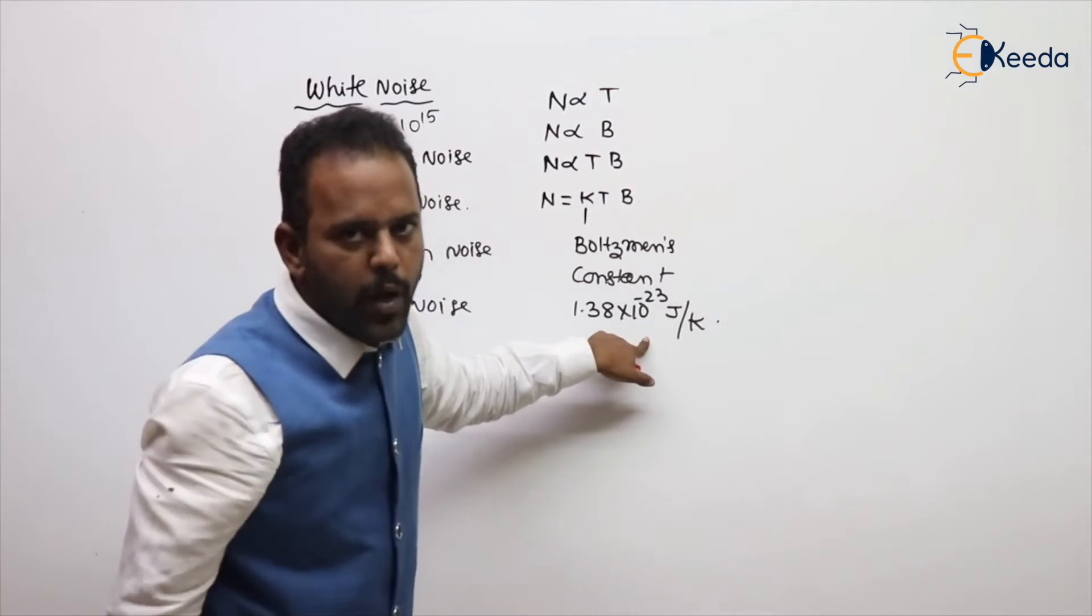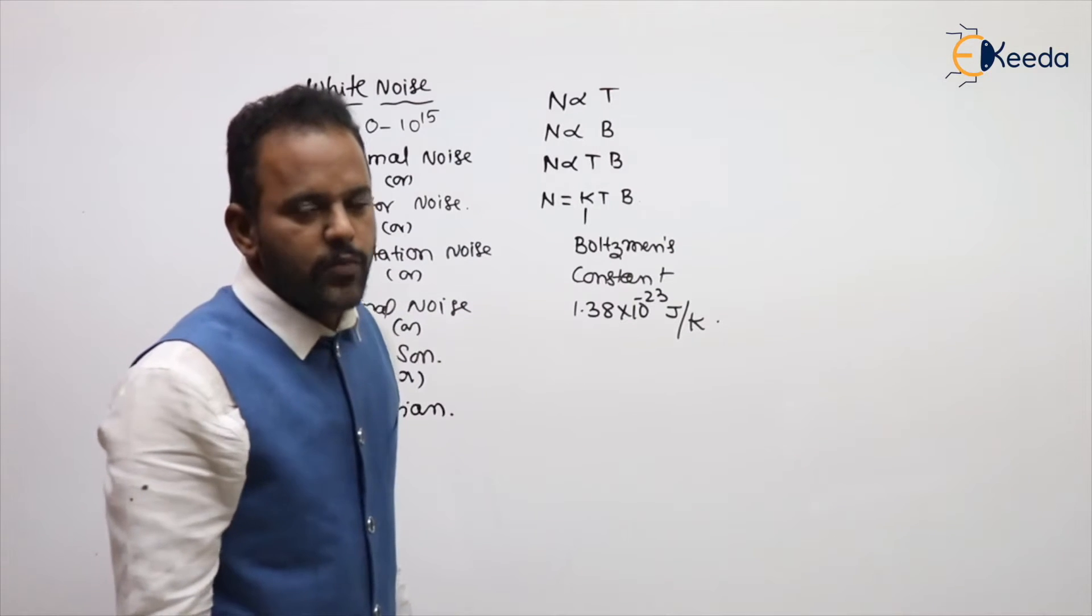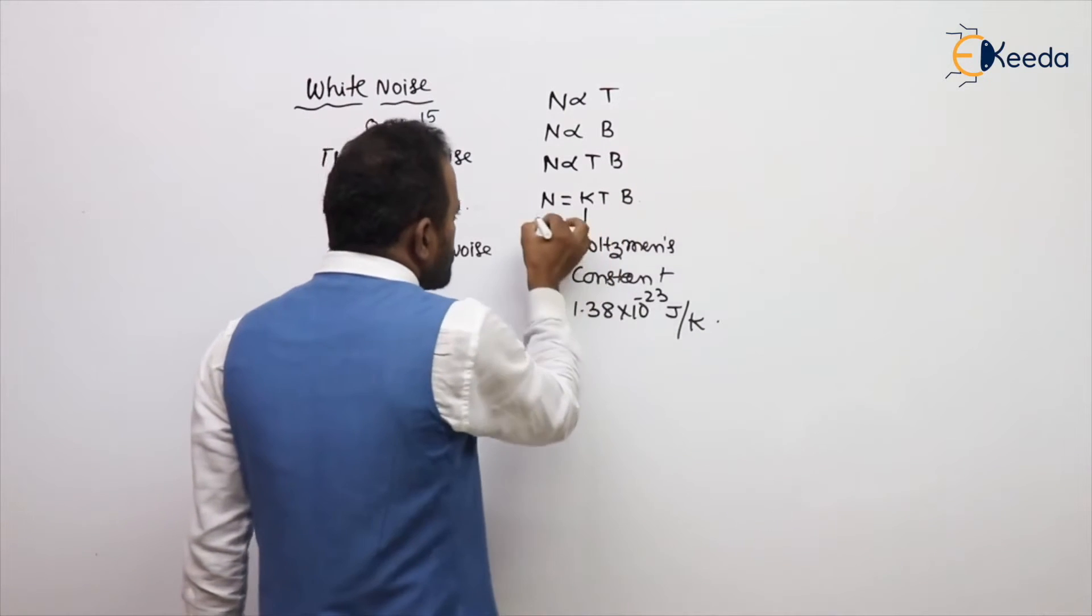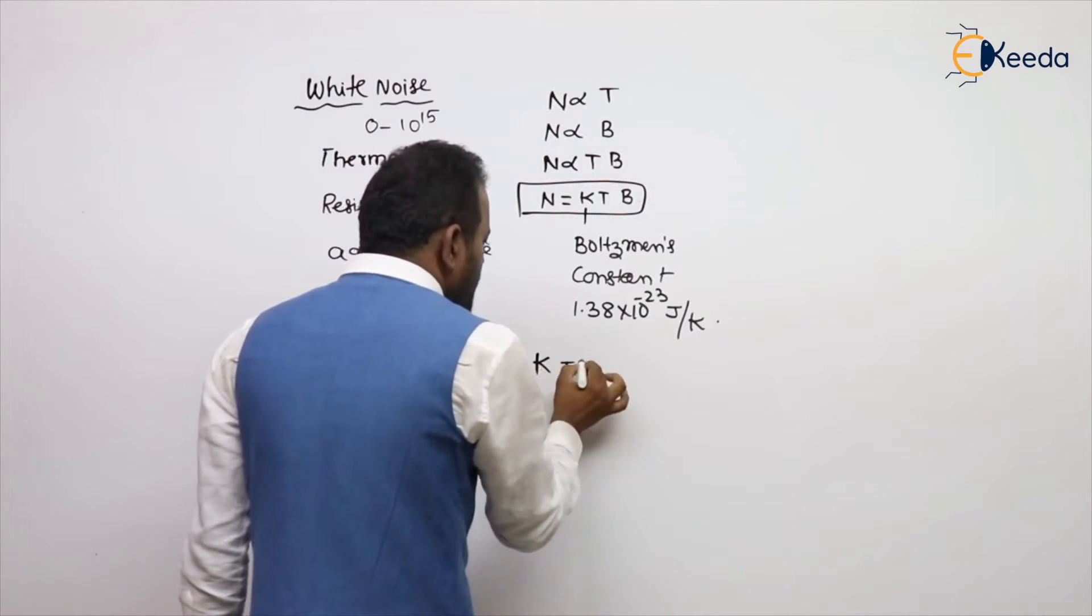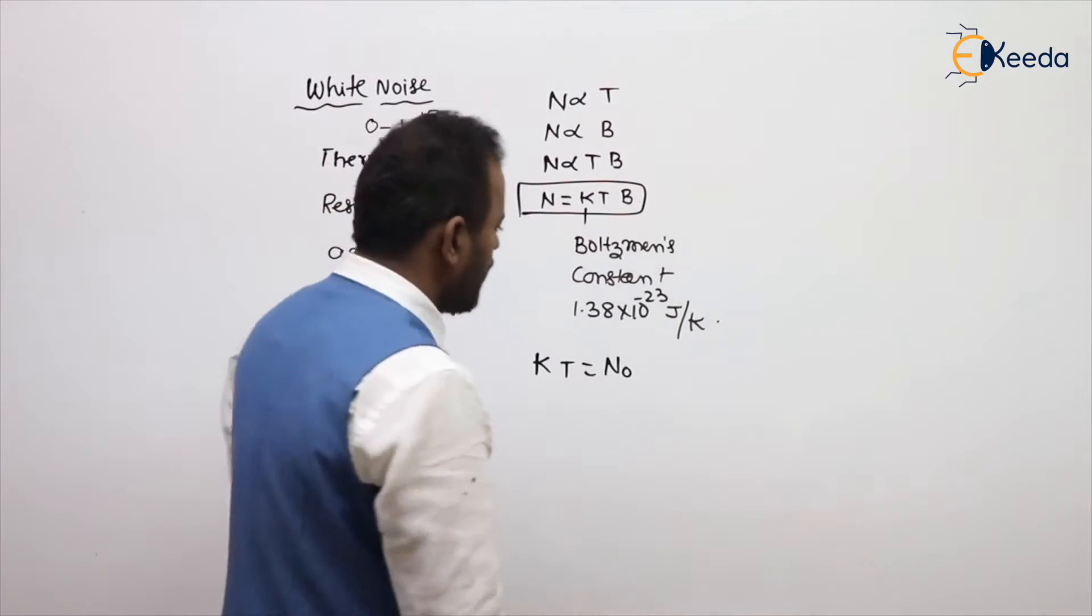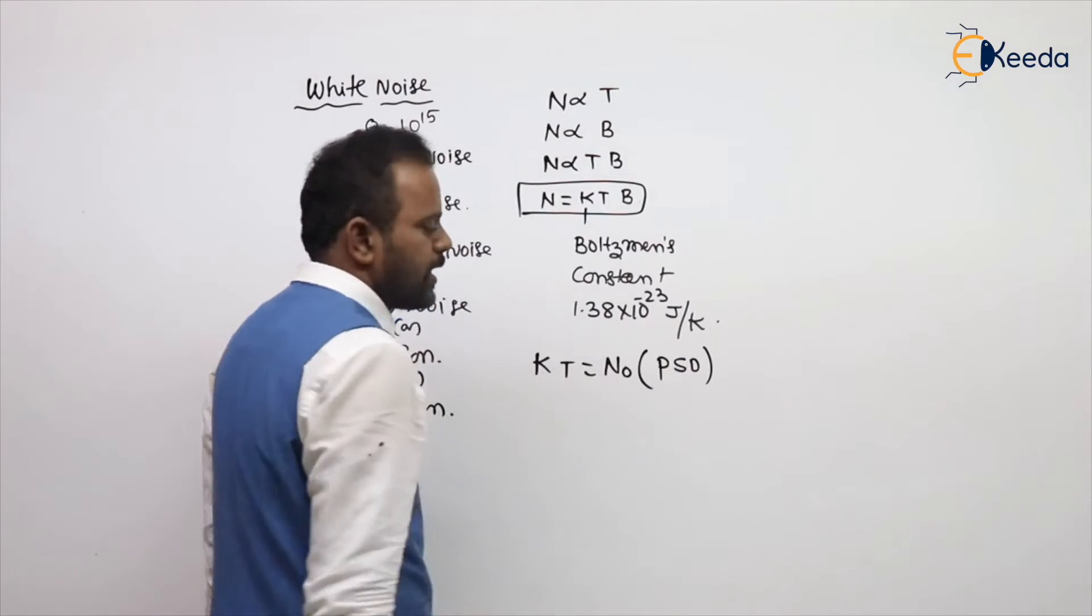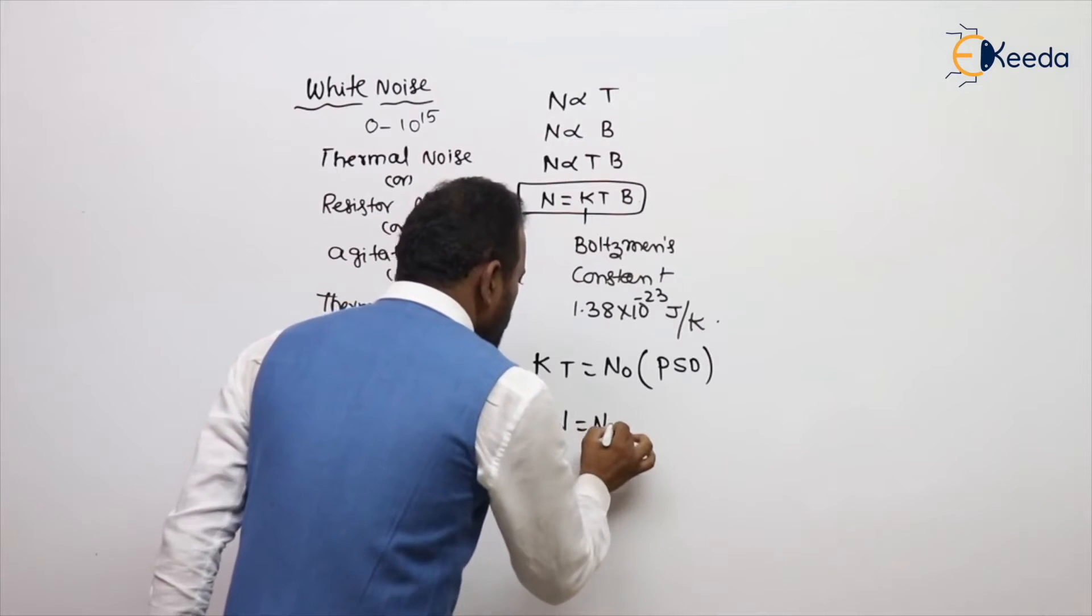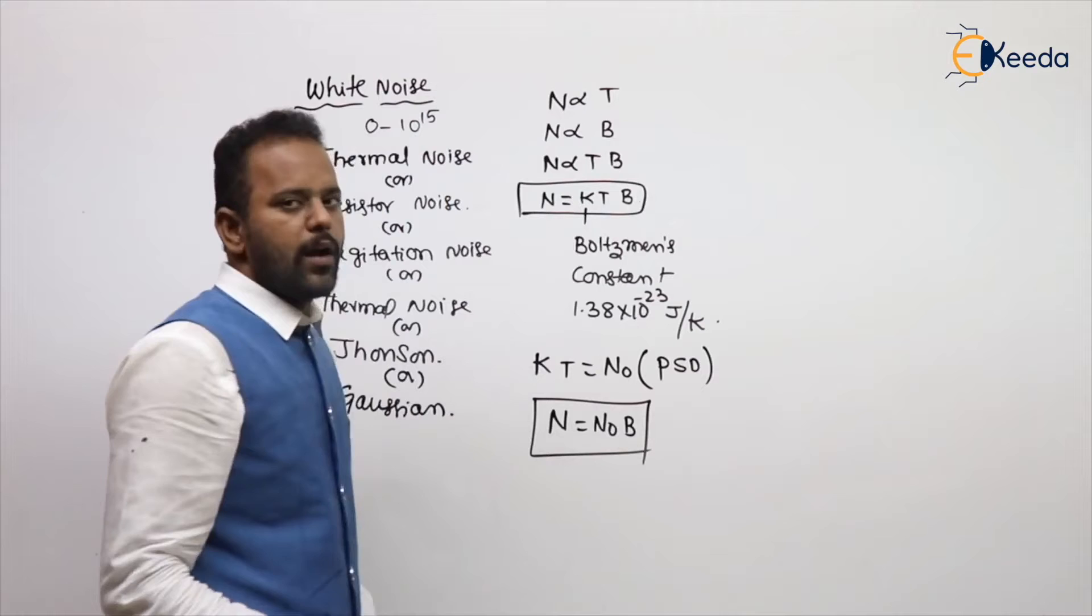In 2017, a GATE problem was also given. You can check from the noise. Nowadays, physical calculator also not allowed, we need to remember the constants. So white noise power N equal to KT into B. That KT itself is called N0. What is N0? N0 is called power spectral density. So finally, white noise power N equal to N0 into B.